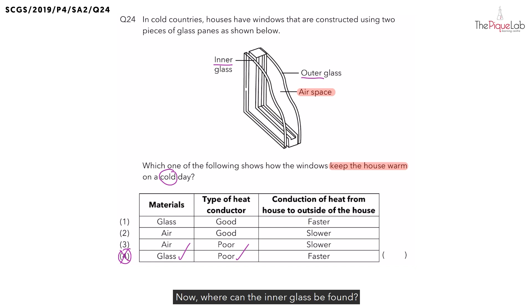Where can the inner glass be found? Would the inner glass be found inside or outside the house? Yes, as the name suggests, the inner glass will be found inside the house. What about the outer glass? The opposite must be true. The outer glass must be found outside the house.